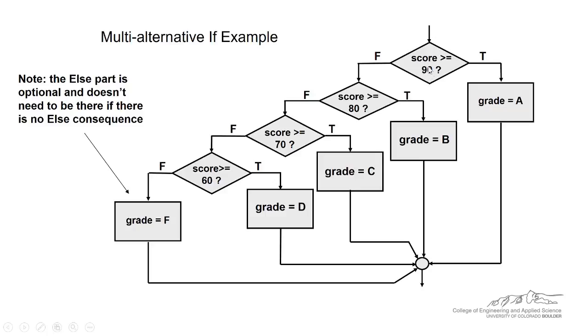We enter in and we ask ourselves, is the score greater than 90? If that's true, then the student receives an A. Otherwise, if the score is not greater than 90, we only have to check one thing. We just have to make sure that it's greater than 80.